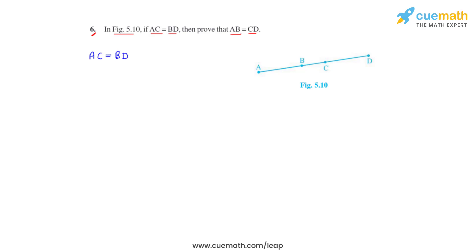Now from the figure we can see that AC can be written as a sum of AB plus BC. So let's do that. We write AC as AB plus BC which equals BD and BD can also be written as the sum of BC and CD.